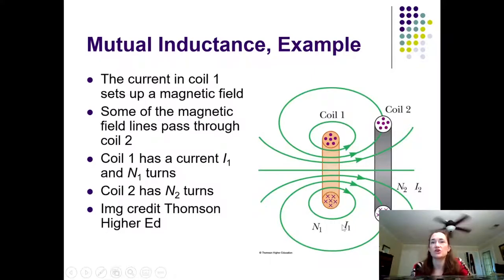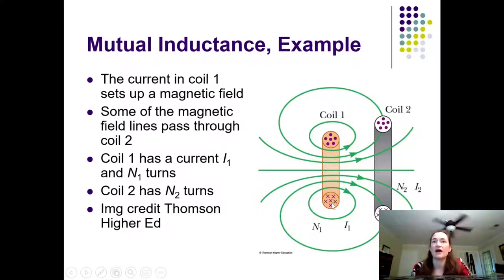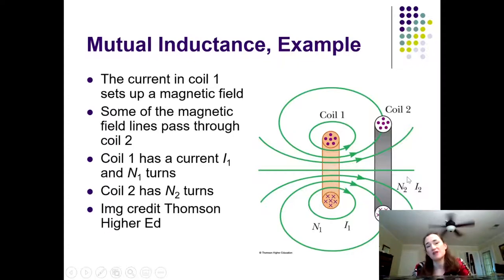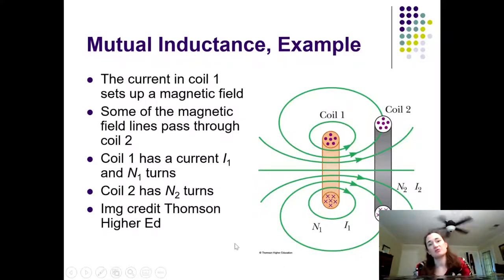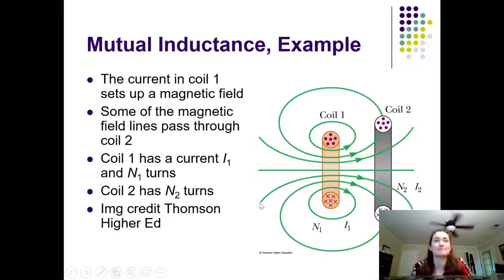There's a current I1 caused by some external source of EMF, like a battery or a wall socket. That current I1 has a flux that penetrates through coil two. And if that flux is changing with time, then you can induce a current I2 in coil two. The constant of proportionality to the EMF is going to be known as the mutual inductance, and that's what we're going to solve for today.